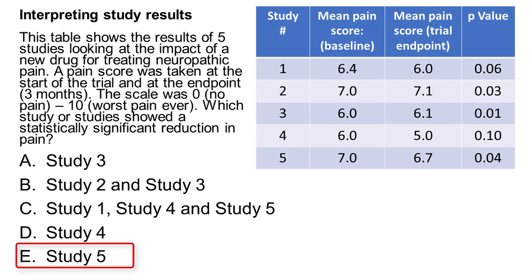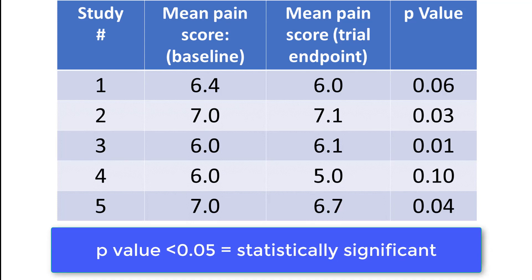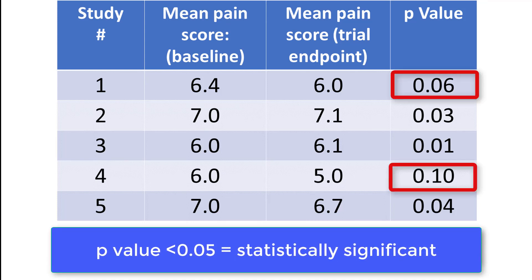If we first have a look at the five studies, study 1 has a p-value greater than 0.05, as does study 4, so these two are not statistically significant and we can ignore them.